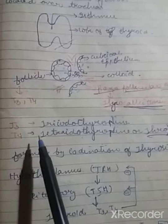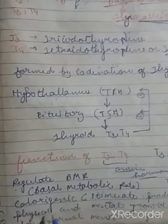For the formation of thyroid hormones T3 and T4, iodine plays an important role. The functions of T3 and T4 include regulating BMR (basal metabolic rate), producing heat required to maintain body temperature, supporting physical and mental growth, and maintaining a normal menstrual cycle. T3 and T4 are amine hormones.